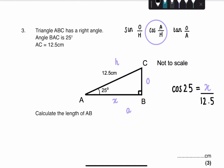Now you just rearrange for X. You just have to bring this up. Cos 25 multiplied by 12.5 equals X.